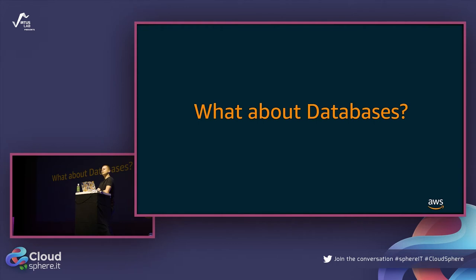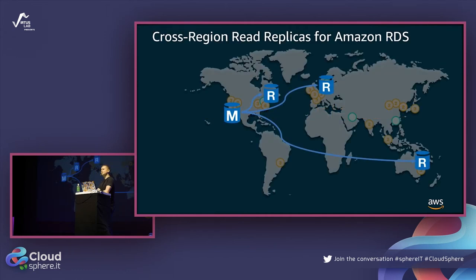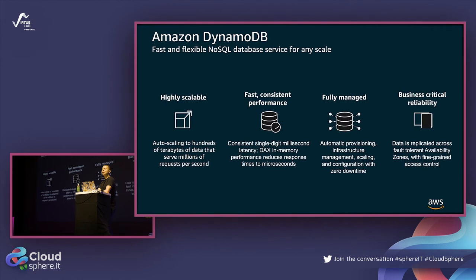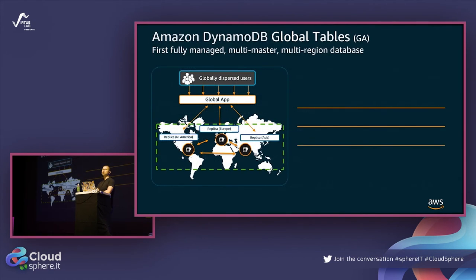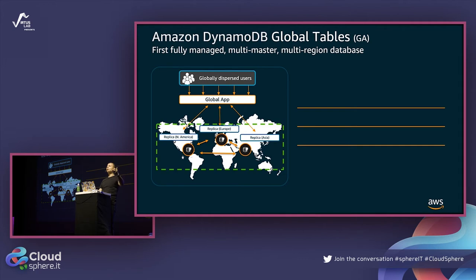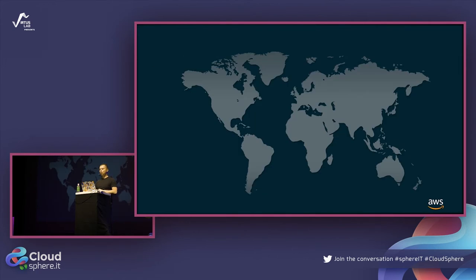The second thing is the database, which is the most critical part because it's really hard to build global databases. One AWS service is RDS (relational database service) - you could build a global application, but usually one location is master and others are read replicas. Instead, we'll use DynamoDB, a NoSQL database, which has a feature called Global Tables - a table that spans multiple locations where writes in one location are replicated to the other.